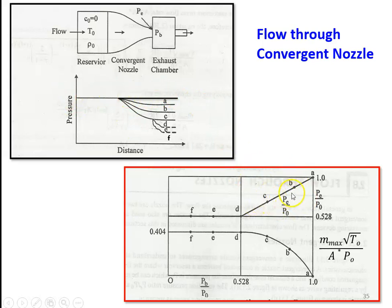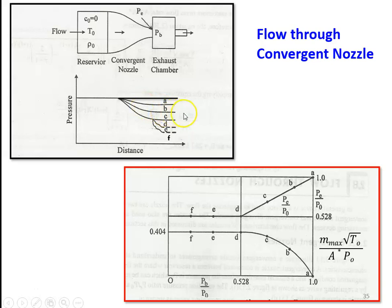At points B and C, the pressure ratio decreases, so PE/P0 is less than 1 but higher than the critical pressure ratio of 0.528. The critical pressure ratio for a convergent nozzle for gamma equal to 1.4 (air) is 0.528. For curves B and C, the pressure decreases up to the exit and adjusts to the exhaust chamber. The exit pressure is higher than the back pressure for points B and C.